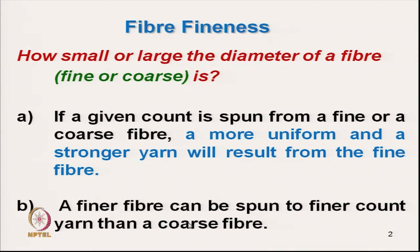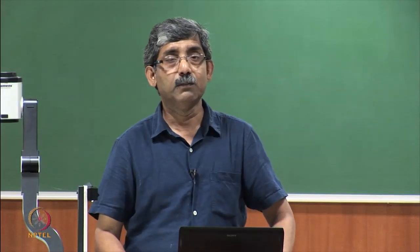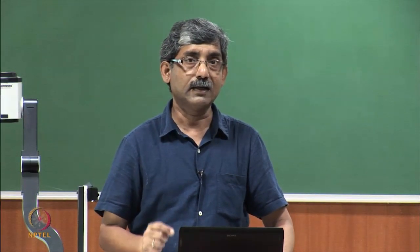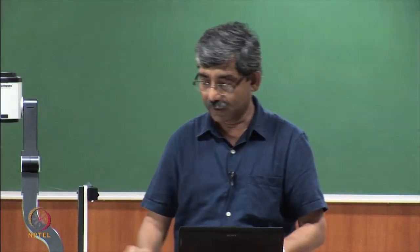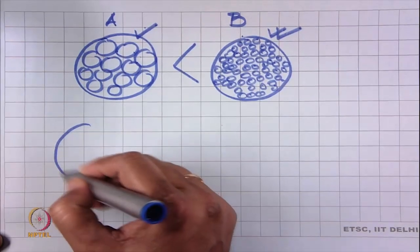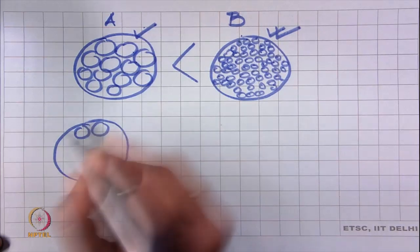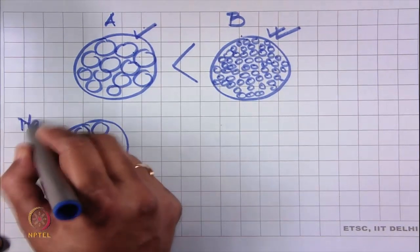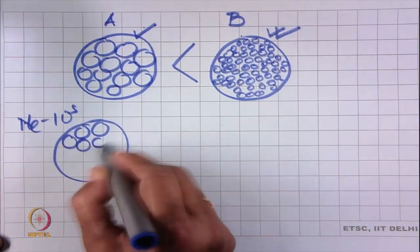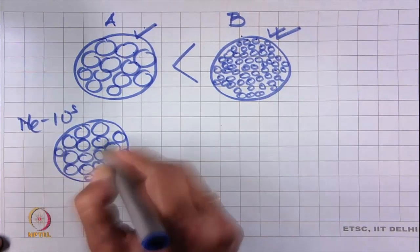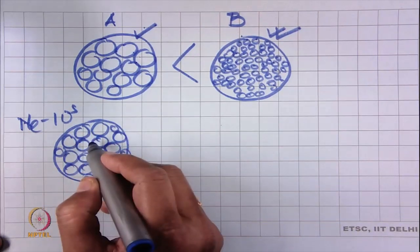Finer fibre can be spun to a finer yarn count than coarser fibre, because to manufacture yarn we need a minimum number of fibres in the cross-section. If we want to produce finer yarn, we have to use finer fibre. For example, a coarser count yarn works well because the required number of fibres is present.